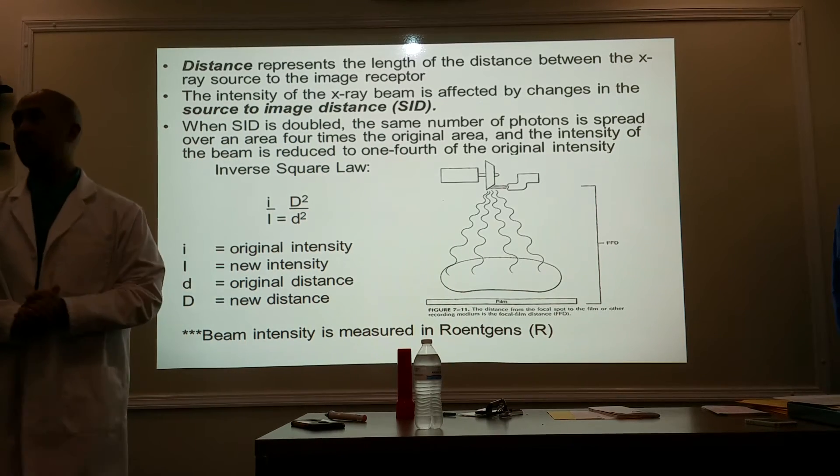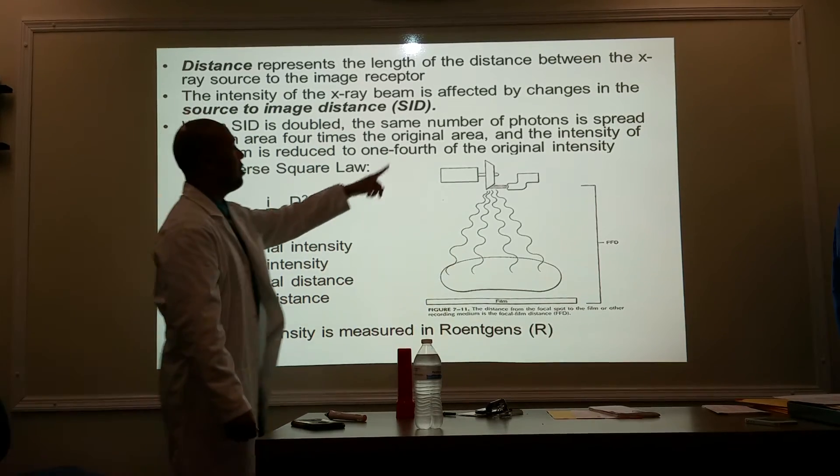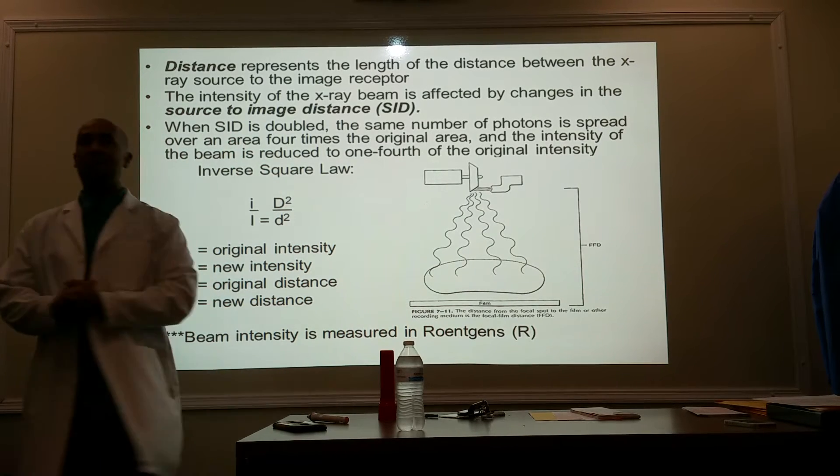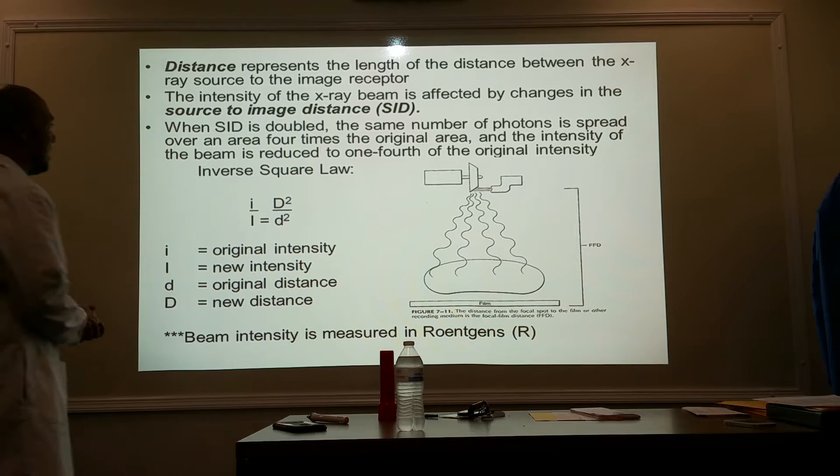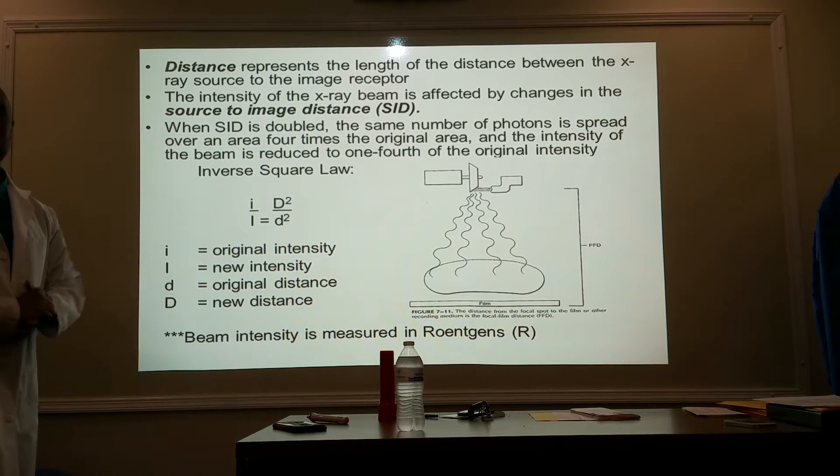SID is doubled. This is in generality. If it's doubled, the same number of photons is spread over an area four times. Therefore, it's going to be a fourth of its original intensity. If I were to triple my SID, my beam is reduced to how much now of its original intensity?